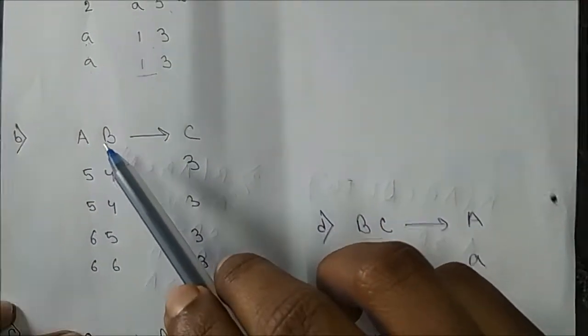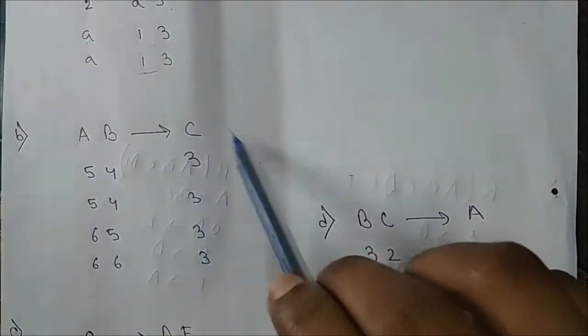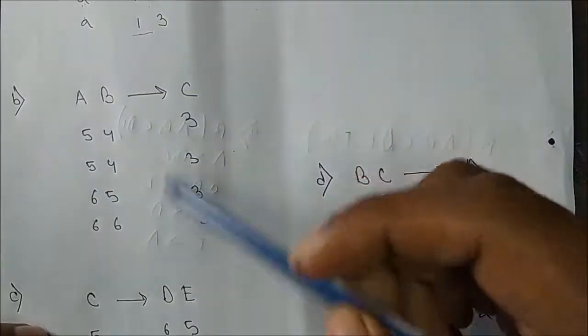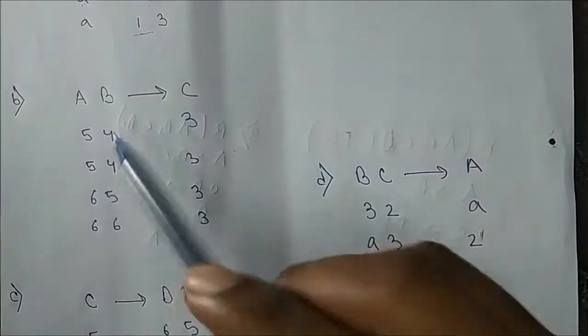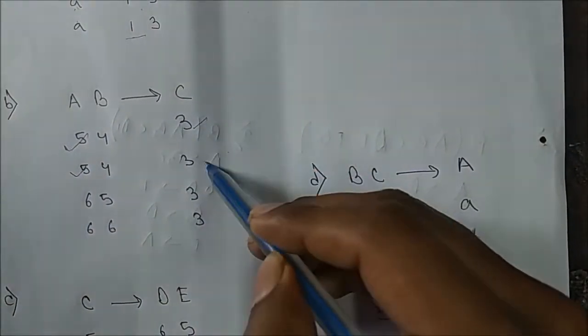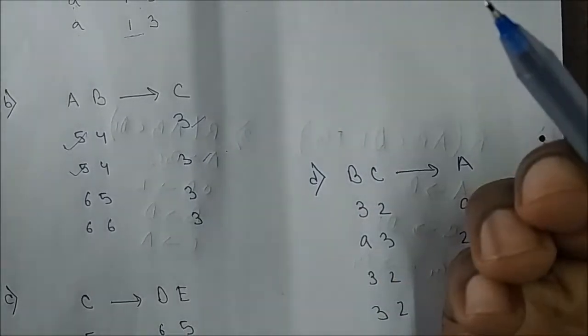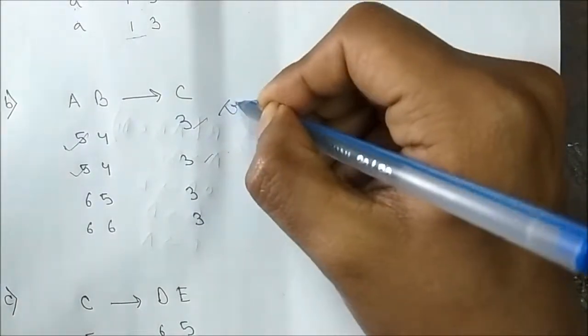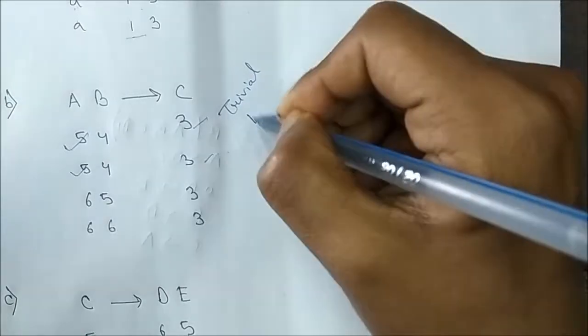The next one: given functional dependency AB → C. Now check if this is trivial or non-trivial. In this set: 5, 4, 3 and 5, 4, 3, 6, 5, 3, 6, 6, 3 — the value 3 appears on both sides, same value 3 and 3. So it means this is a trivial functional dependency. See how easy it is to check which one is trivial or non-trivial.